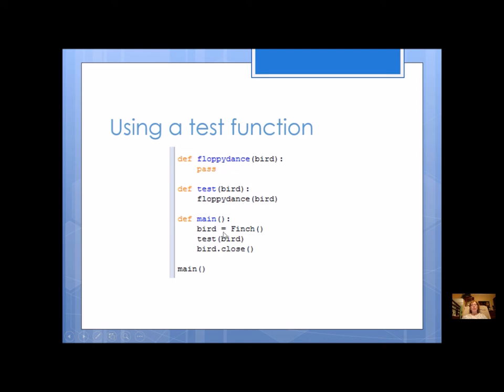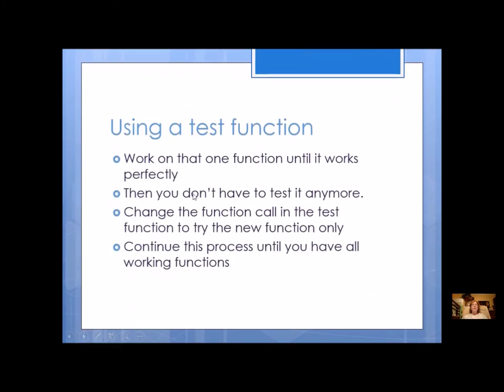I didn't have to change main at all. I just changed the one function call in test, and I'm just going to keep working on that one function until it works perfectly. Then I don't have to test it anymore. I changed the function call in test for just each new function. So every time I try a new dance step, I'm just going to test that one function. Continue this process until you have all your working functions.